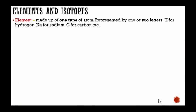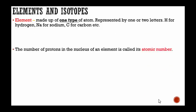Elements and isotopes. An element is made up of one type of atom. It's represented by one or two letters like H for hydrogen, Na for sodium, C for carbon. It's made up of one type of atom.